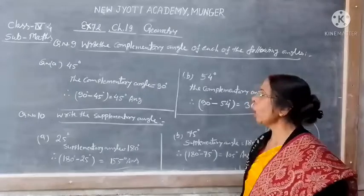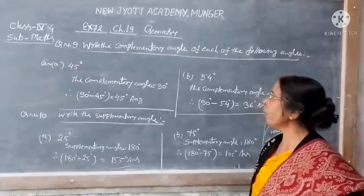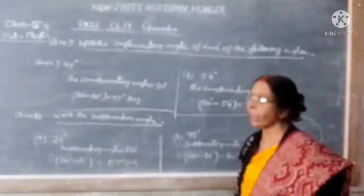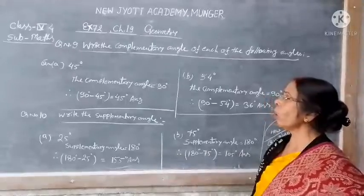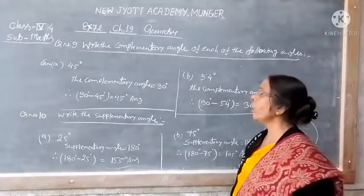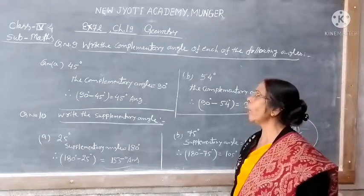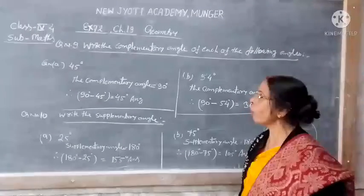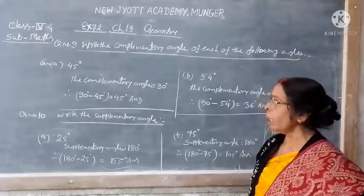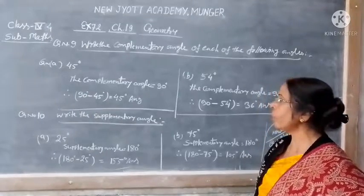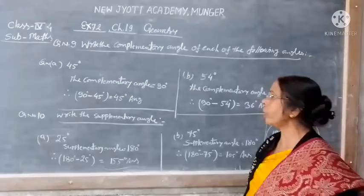To find this angle, what do we need to do? Question number 9, part A is 45 degrees. We have been given the angle of 45 degrees.